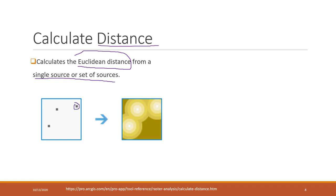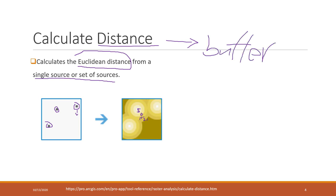When you have the source, ArcGIS Pro will create a raster and calculate the distance from each source. For example, the first ring will be 5 meters, the second ring 10 meters, the third ring 15 meters, and then 20 meters. It is similar to buffer analysis for vector data, but for raster data the equivalent is called Calculate the Distance.